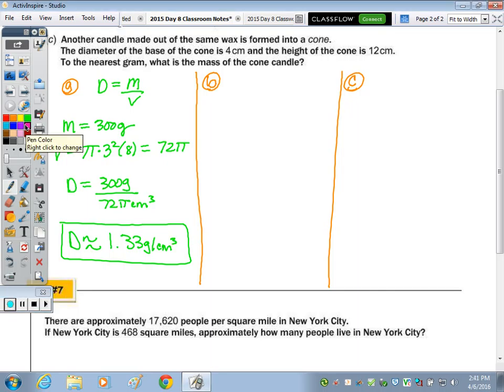So for part B, it says another candle is made out of the same wax. So what does that tell us? Same density. So this time we're going to form the wax into a cube. The mass of this candle is going to be 475 grams. To the nearest tenth, what are the dimensions of the cube? Well, we know the density. I'm going to write the exact answer.